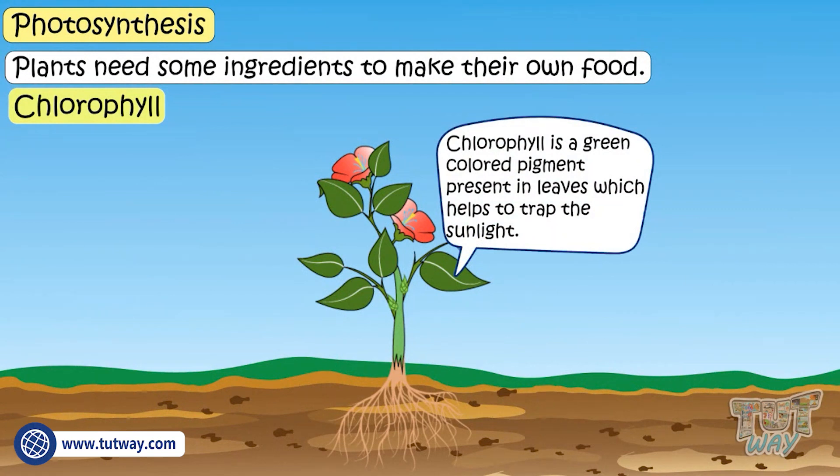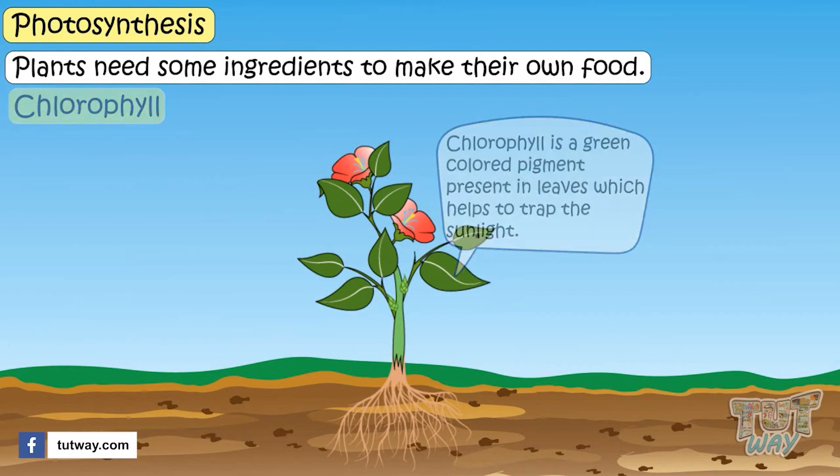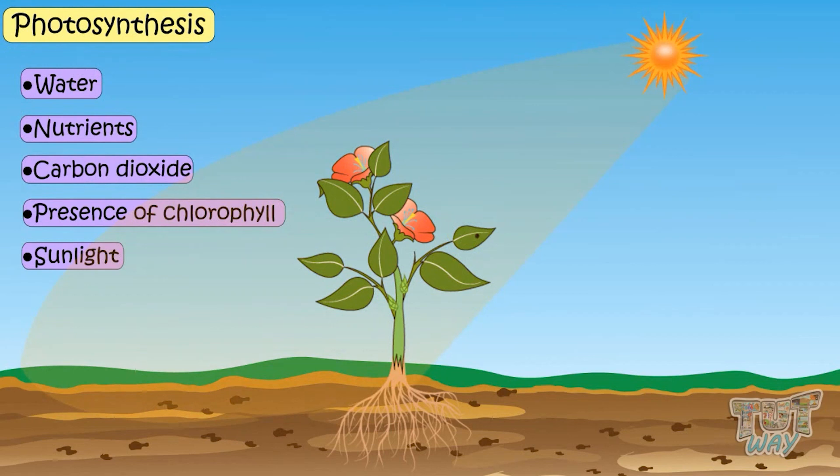And this green pigment chlorophyll helps the plant to trap the sunlight. So kids, these are the ingredients required by the green plants or leaves to make their food, and the process is called photosynthesis.